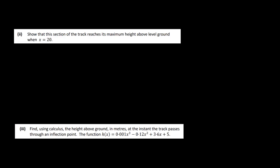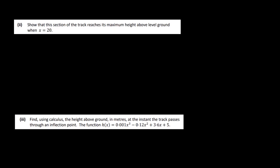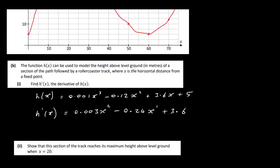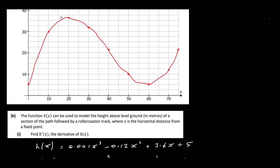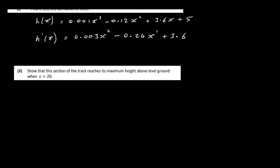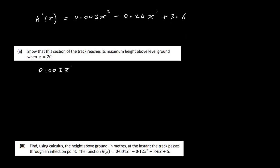Okay, so part two then, show that this section of the track reaches its maximum height above level ground when x is equal to 20. What we've done here is we've differentiated our function, which effectively gives us the slope of any tangent to this particular graph here. So what we're going to do is take our differentiated function, and we're going to let that equal to 0.003x² - 0.24x + 3.6, and we want to let that equal to 0. So we've got to solve this.